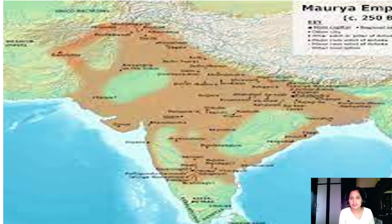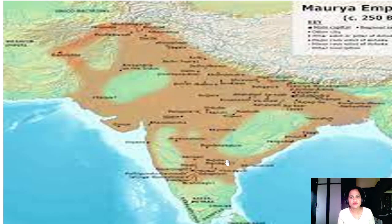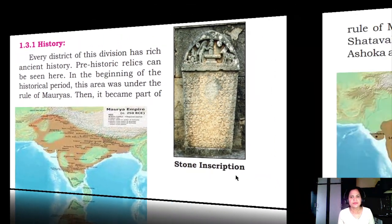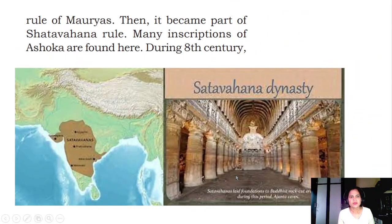The Maurya empire extended widely, but some southern part of Karnataka was not under the rule of the Maurya dynasty. North Karnataka was ruled by the Mauryas, and this Kalburgi Division was under them at that time.